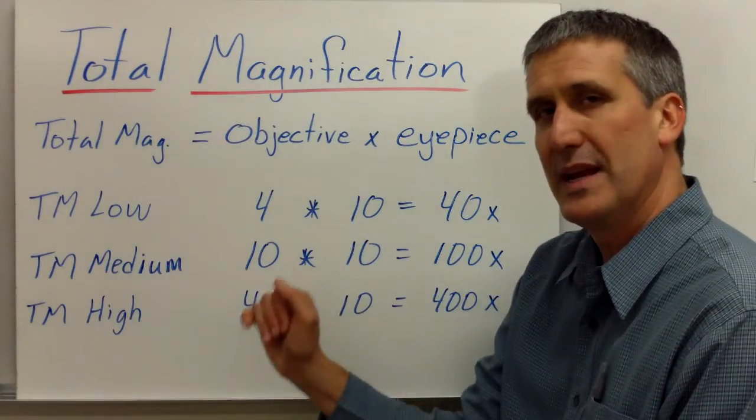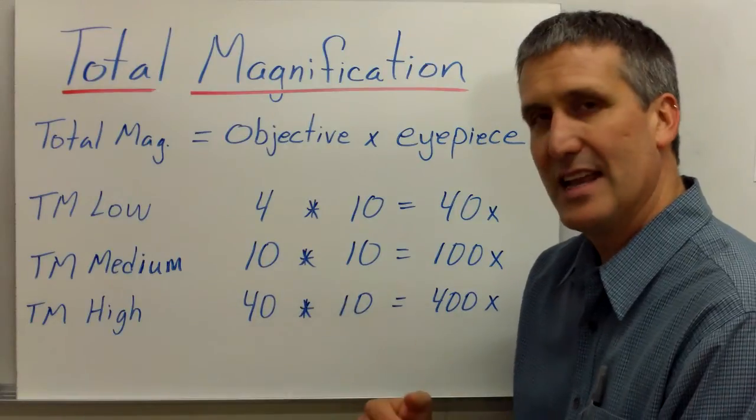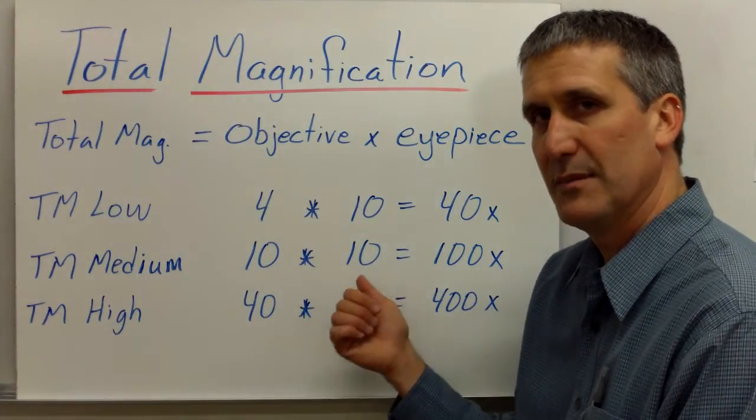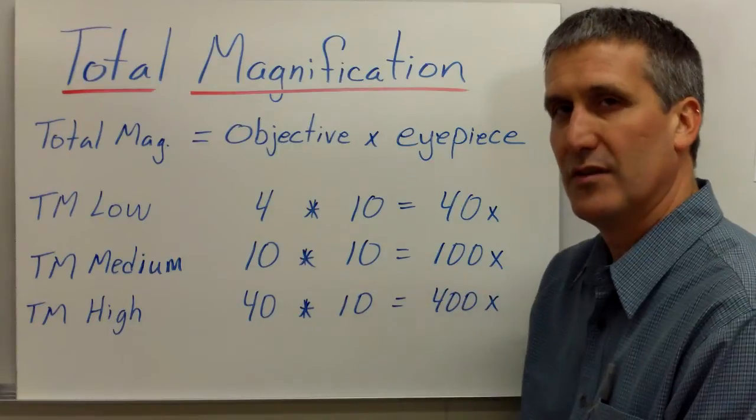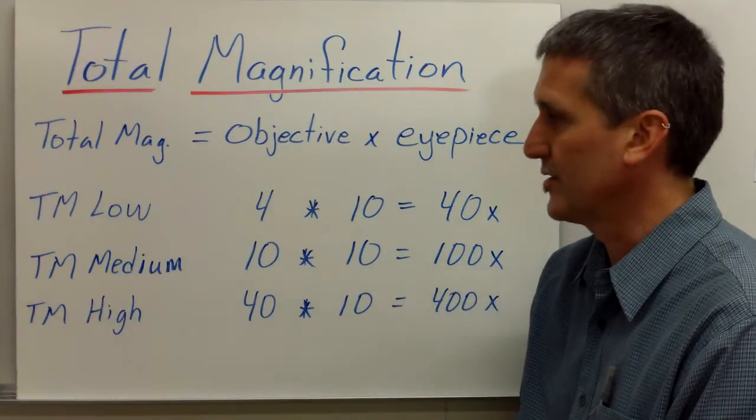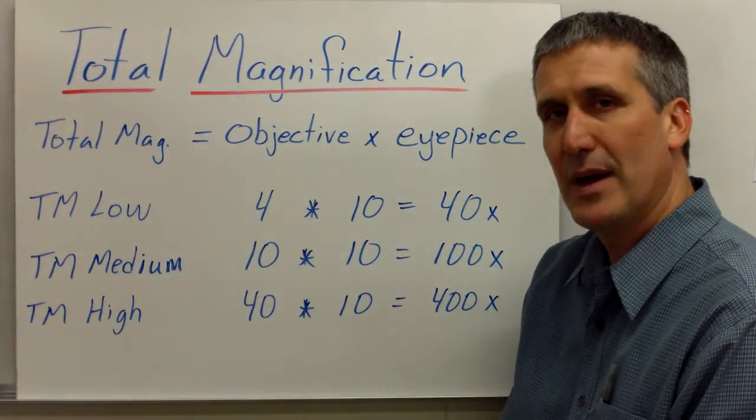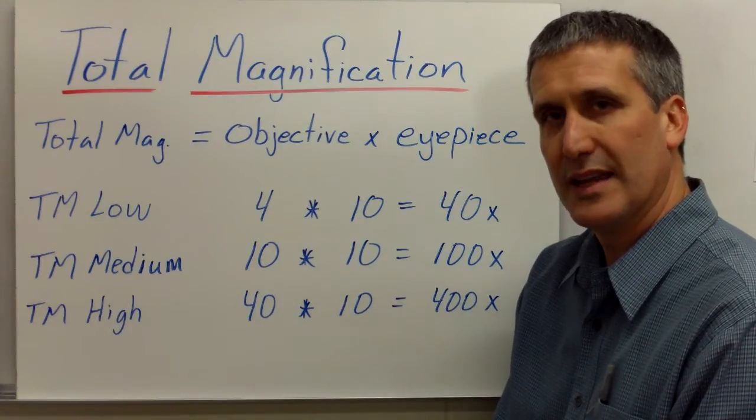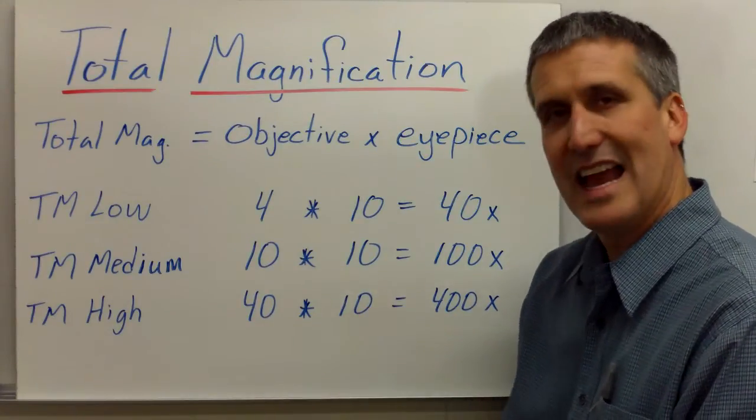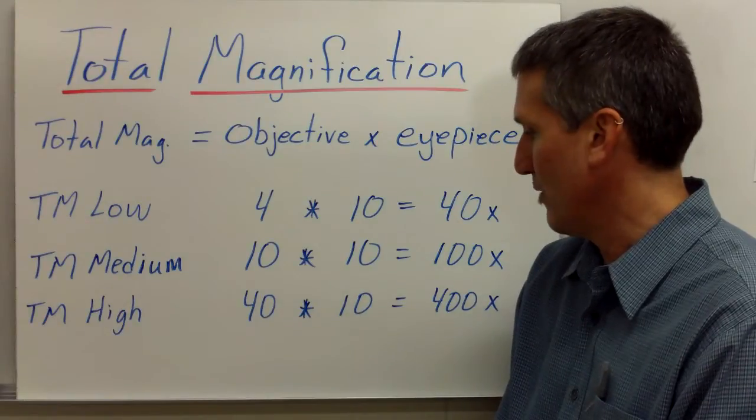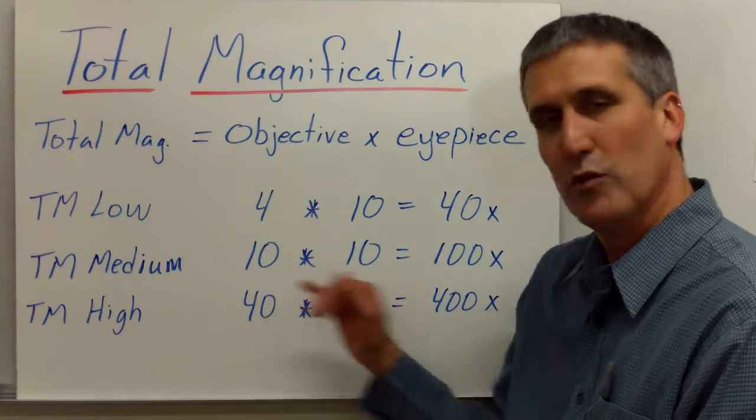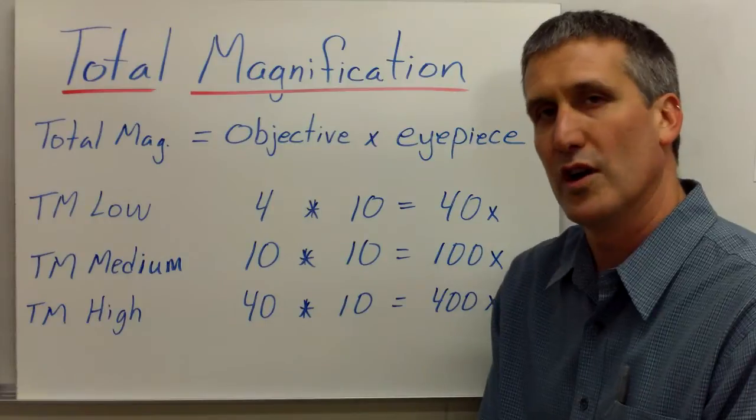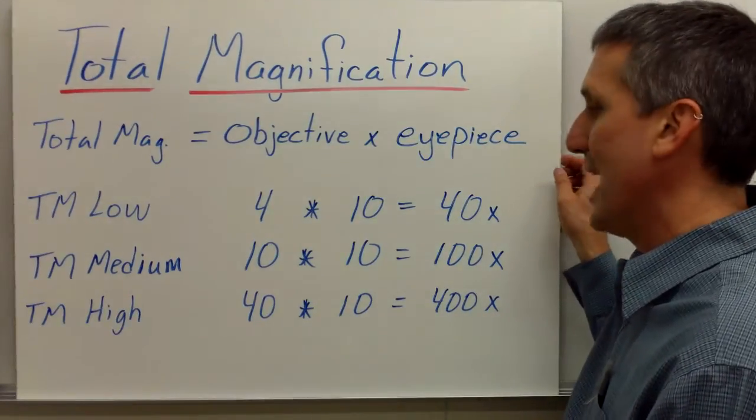If you're looking under the medium magnification, that means that it would be 10 power for the objective times 10 for the eyepiece, and that would give you a total magnification of 100x. If you're looking at the high power objective, you have a 40x magnification power on the high power objective, plus 10 power for the eyepiece, you multiply those together, and you get 400x for the total magnification.